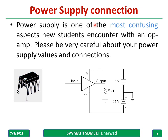The power supply connection is one of the most confusing topics for students. Remember: connect plus VCC to the positive of one power supply, and minus VEE to the negative of a second — separate — power supply. The negative of the positive supply and the positive of the negative supply are shorted together and grounded.